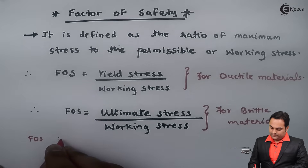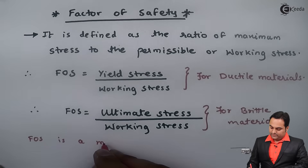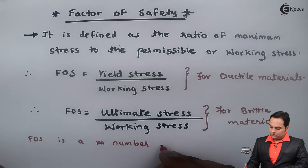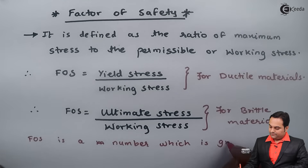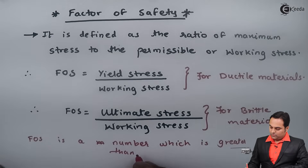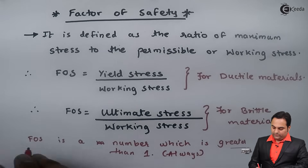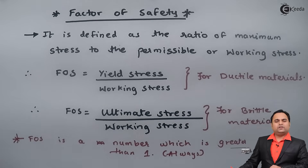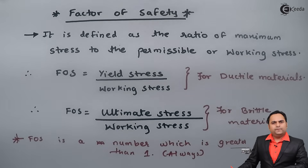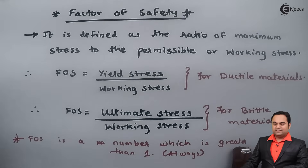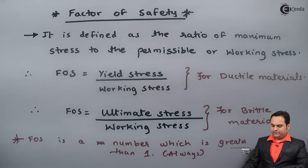FOS is a number which is always greater than 1. We have to remember that the factor of safety for any given material should be greater than 1. Now, what is the significance? Why do we use factor of safety?